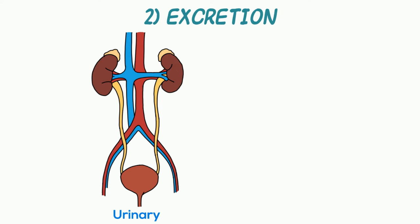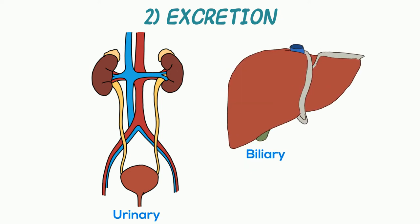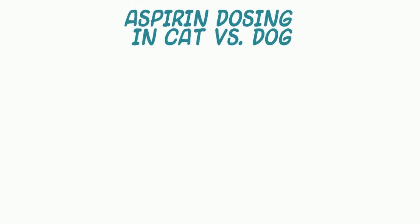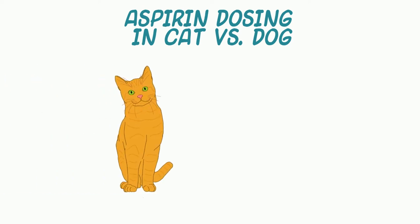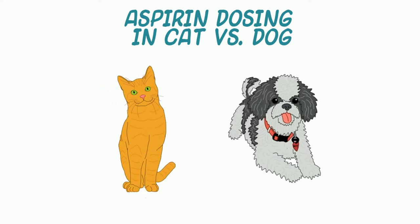Drugs also may be handled by the liver to be secreted into the bile, then excreted in the feces. Now let's discuss a practical example of how these processes, and even the math, can help us understand differences in administering a dose of the drug aspirin to a cat versus a dog.